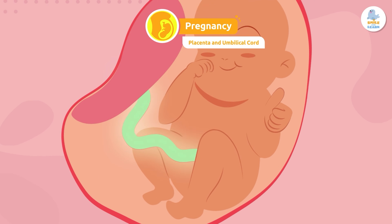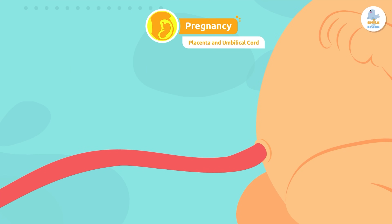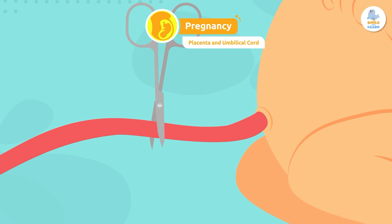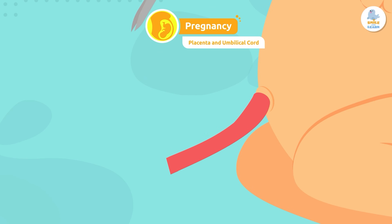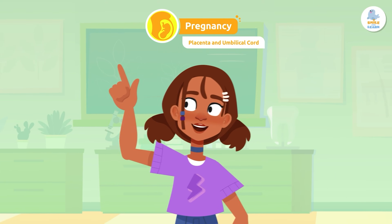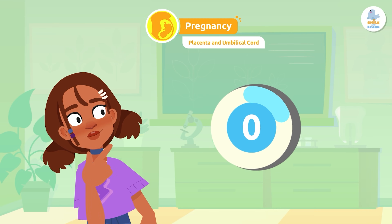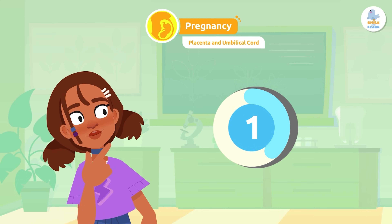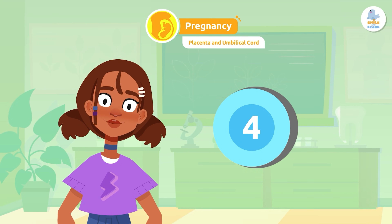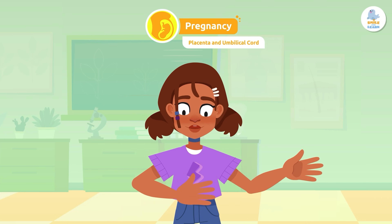The placenta is connected to the fetus by a tube called the umbilical cord. When the baby is born, the cord is cut and a small scar remains on the newborn. Can you guess what that scar is? Of course — it's the belly button! I'm sure you already knew that.